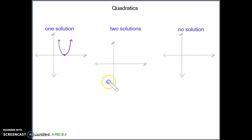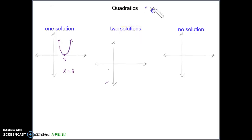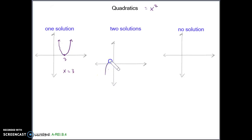So let's say that this was 3. Our solution set here would be x equals 3. Most quadratics, however, are going to have two solutions. Quadratics are things to the second power, so there are two of the variable that have values that make the equation true. What you'll normally see is a quadratic that intersects the horizontal axis or the x-axis at two different places, and these would be your two solutions.